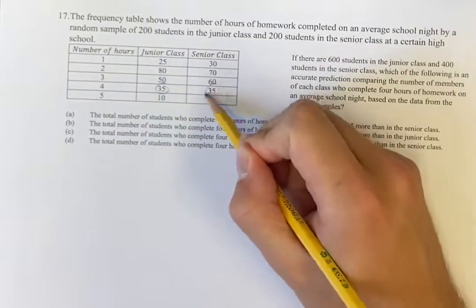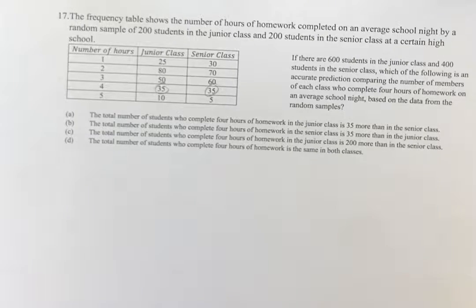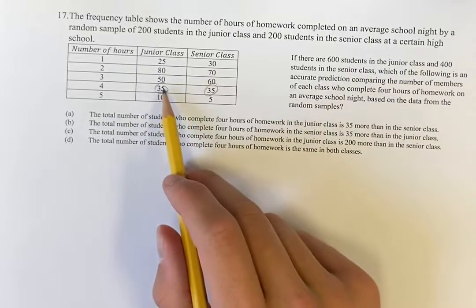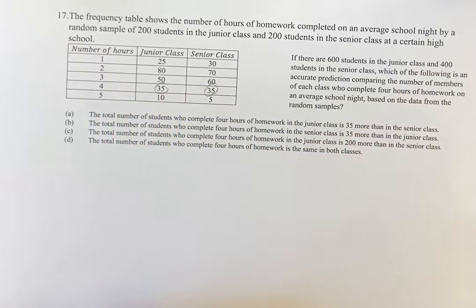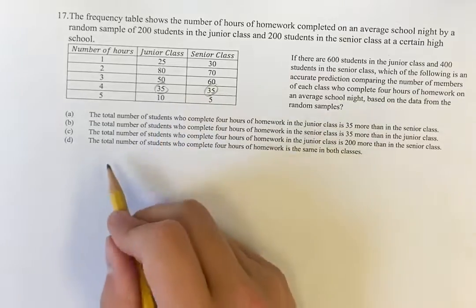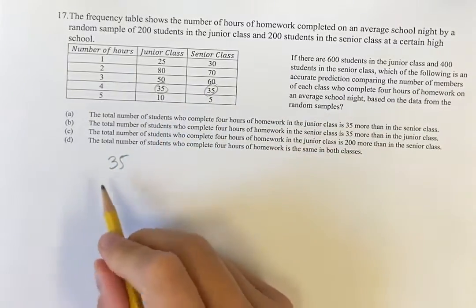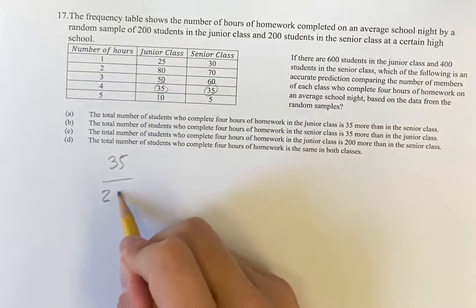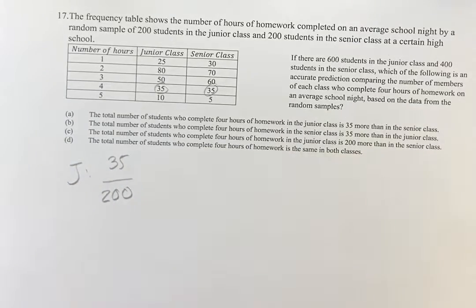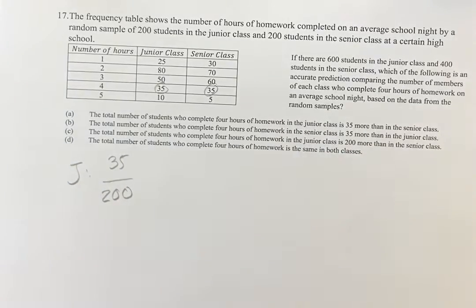That's going to be these values right here. And what we can say here is that in the junior class, for four hours of homework a night, we're going to say 35 out of the 200 students that were sampled in the junior class study four hours a night, complete four hours of homework a night.